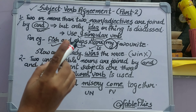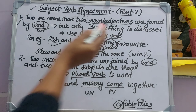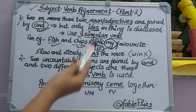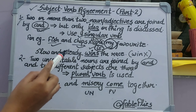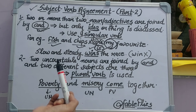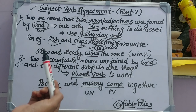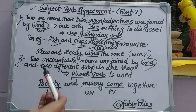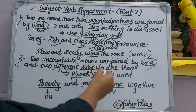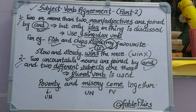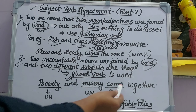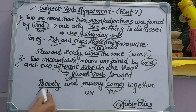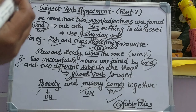Rule: If two or more nouns or adjectives are joined but their main idea refers to only one person or thing, we always use a singular verb. For example: 'Fish and chips is my favourite' — fish and chips is one idea, so we use singular verb. Another example: 'Slow and steady wins the race' — only one idea or thing is discussed, so singular verb is used.